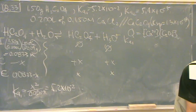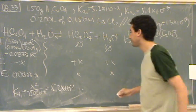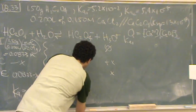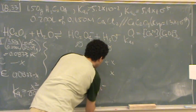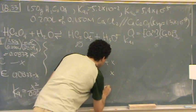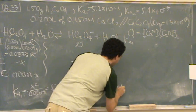For x, they get 0.0045. So solve for x, solve for x, get 0.0045.